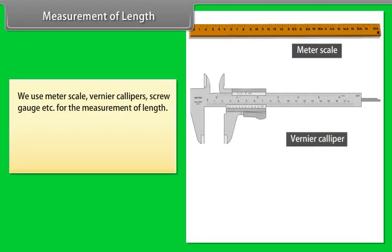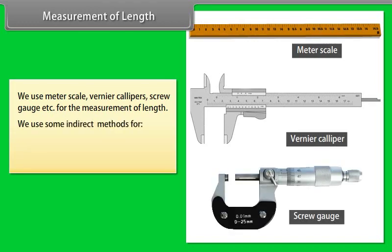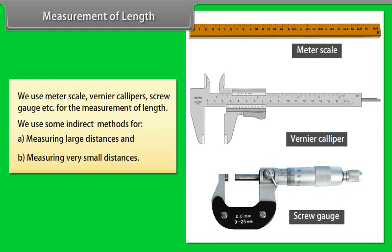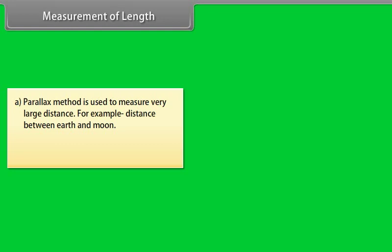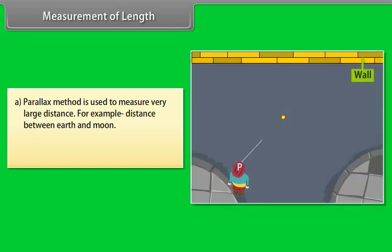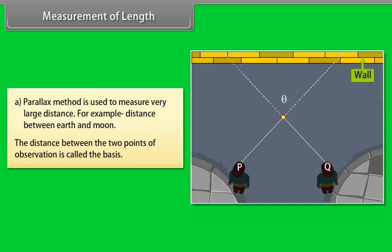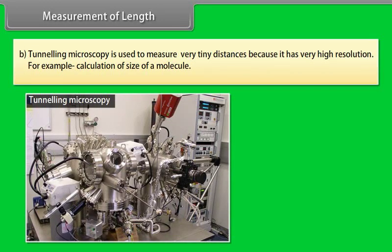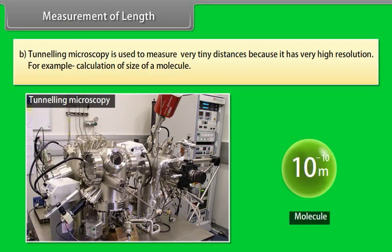Measurement of length. As you know, we use meter scale, Vernier calipers, screw gauge, etc., for the measurement of length. We use some indirect methods for measuring large distances and measuring very small distances. Parallax method is used to measure very large distance, for example distance between earth and moon. Let us understand with an example. A girl is observing the rod against a wall from two different points P and Q. She notices that the position of the rod seems to change with respect to the wall. This is known as parallax. The distance between P and Q is called basis. Tunneling microscopy is used to measure very tiny distances because it has very high resolution, for example calculation of size of a molecule.